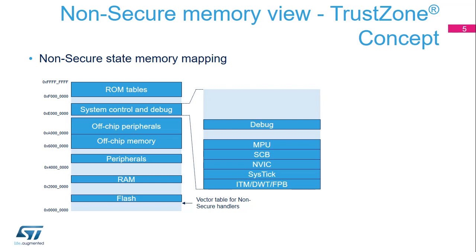This slide describes the memory mapping used when the core runs in non-secure state. It is identical to the ARMv8-M memory mapping. Branches to memory locations defined by secure software, called secure gates, enable non-secure software to call a secure service. Secure memory is invisible from non-secure software.